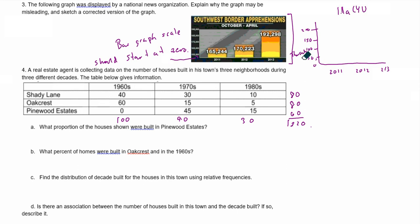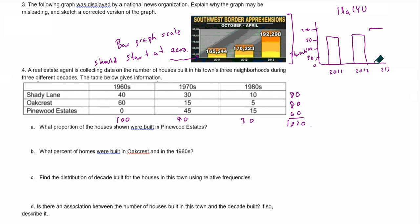For apprehensions, we have 165, so that's roughly about right there. Then 170, just a little bit higher but not too much — making sure the widths are the same. And then 190, just below 200. As you can see, there appears to be very little difference between 2011 and 2012, and just a slight increase at 2013 — not as large as the original misleading graph suggested.